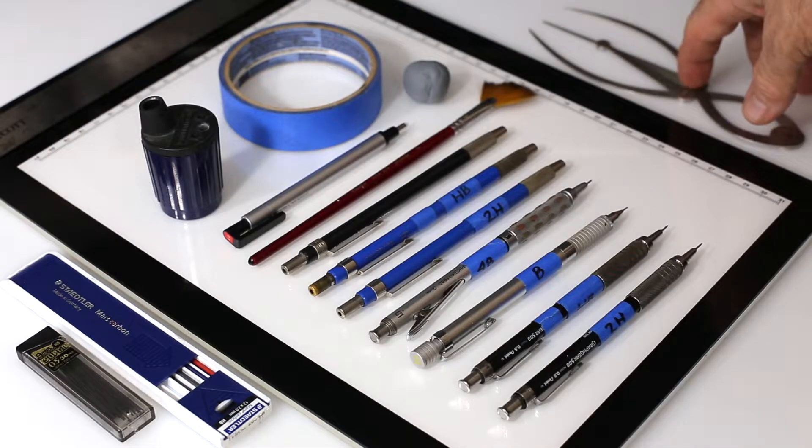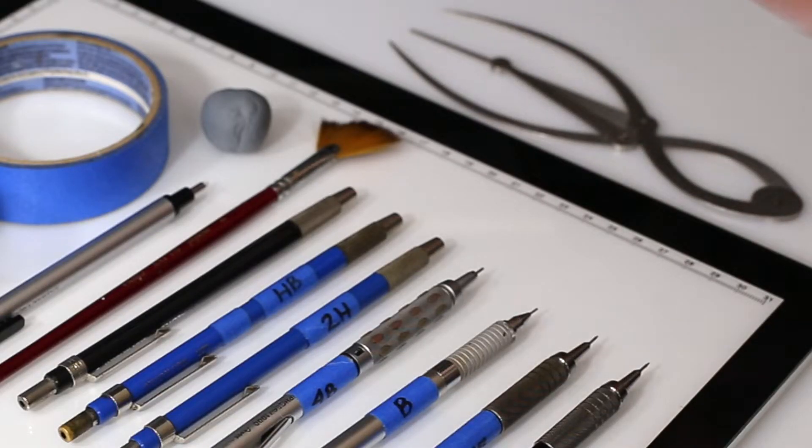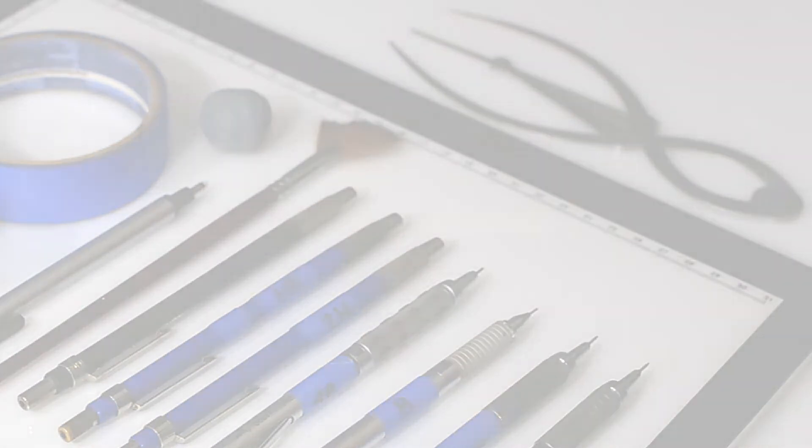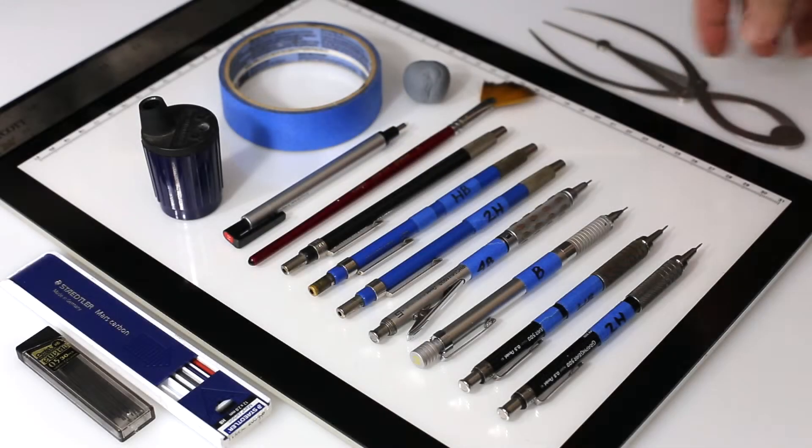These are phi calipers. They're not really needed to complete the course, but a lot of master painters would use these to incorporate phi proportions. I do have a file available you can download in the resources if you want to practice using these phi calipers on a painting or drawing.